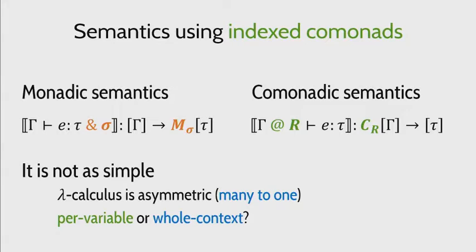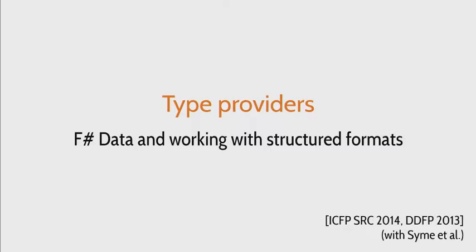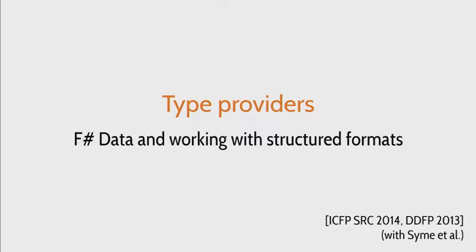The comonad semantics is interesting because it's not a simple duality between the two. In the comonadic semantics, we're actually putting the structure around the whole context, and the context is a vector of variables. In the monadic world, we're putting the additional structure only around the single result, which is just a single value. Because of this asymmetry in lambda calculus — mapping multiple variables to a single value — there's actually a richer structure needed than in the monadic effect system world. If you have any questions about this part of the work, now is probably a good time to ask, or we can talk more about it later.